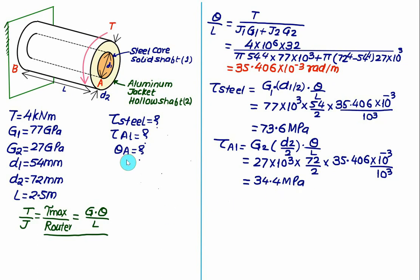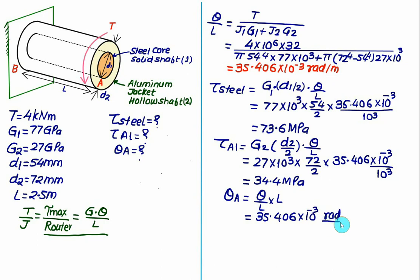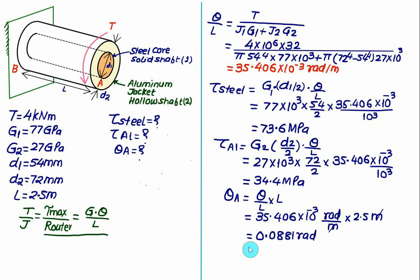Finally, to find the angle of twist at end A: theta_A = (theta/l) × l = 35.406×10⁻³ rad/m × 2.5 m = 0.0881 rad. Converting to degrees: 0.0881 × (180/π) ≈ 5.07 degrees.